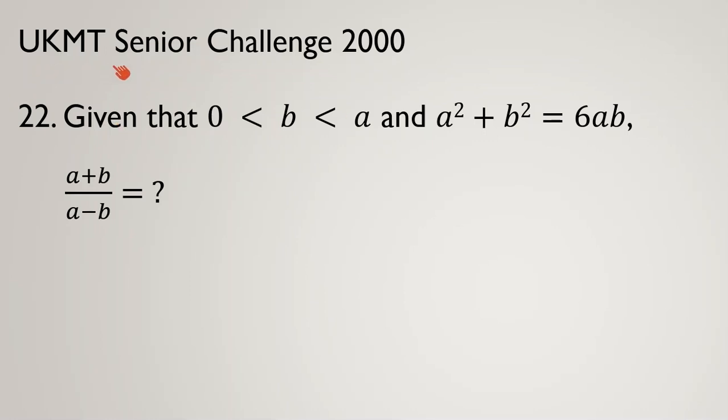This problem is from UKMT Senior Challenge 2000, problem number 22. Given that 0 < b < a (both positive) and a² + b² = 6ab, find (a+b)/(a-b).